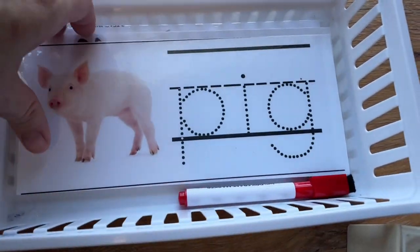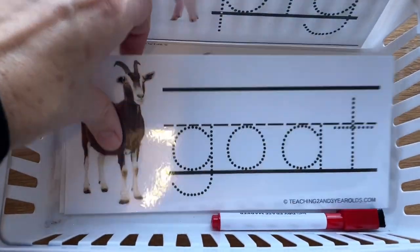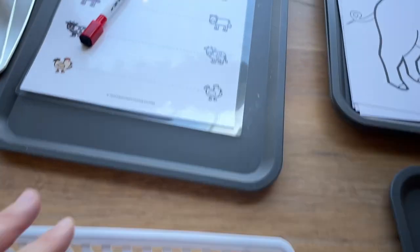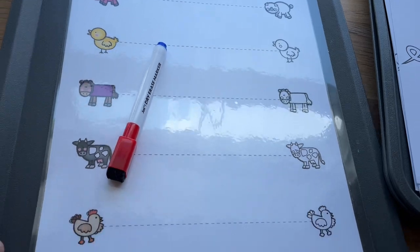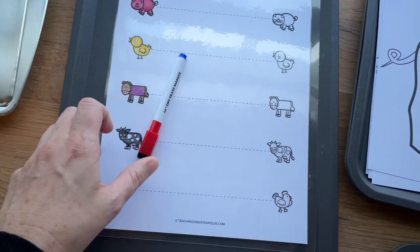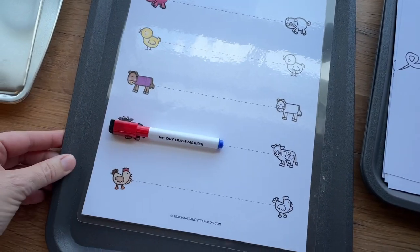And then this will be a writing activity where they can follow along the lines, and then this is another pre-writing activity that I'll have set up. They just simply draw across the line to the other animal.